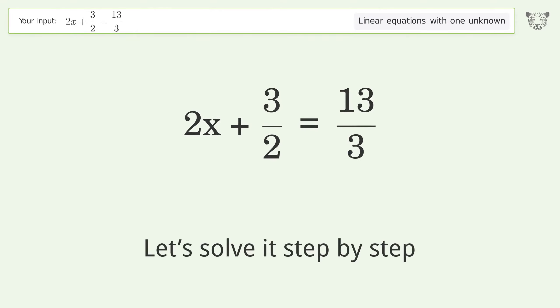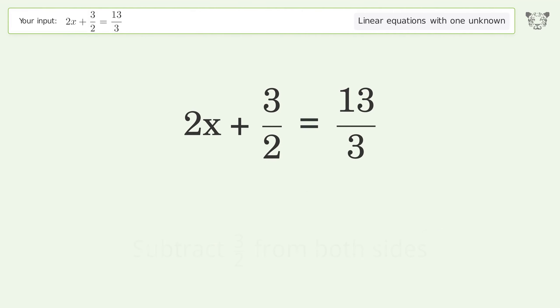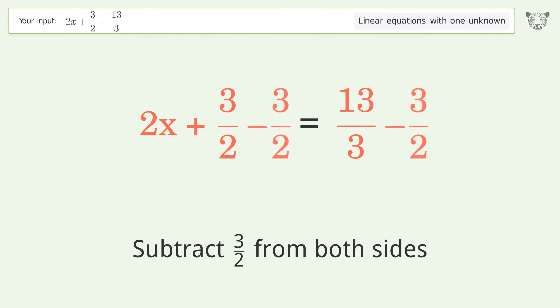Let's solve it step by step. Group all constants on the right side of the equation. Subtract 3 over 2 from both sides. Combine the fractions.